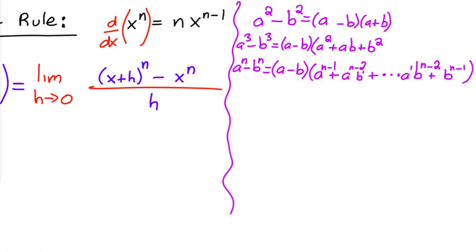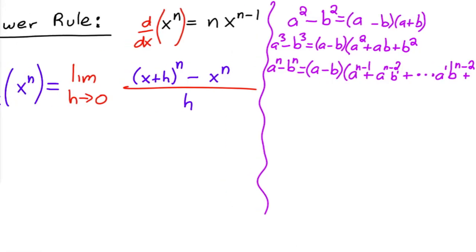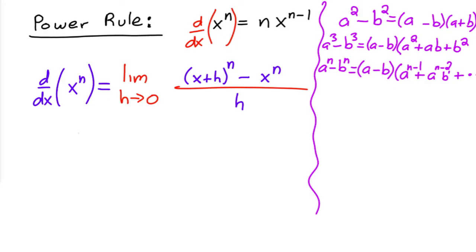Okay, so if you apply this identity back over here, what you would get is, let me give myself enough space, this is going to be, the first parentheses is going to be... so here you have to imagine that x plus h is your a right here and x is your b. So then what we're going to have is a minus b, so that's x plus h minus x times...